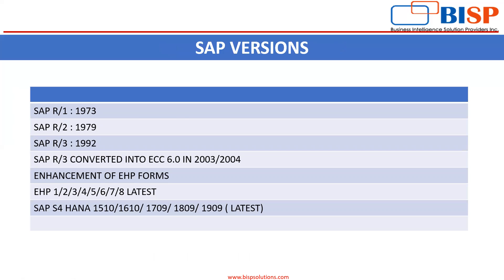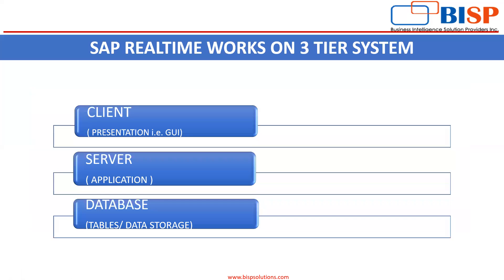SAP was established in 1972 — it is a German company. The first version was launched in 1973, followed by various versions. Focusing on the latest version, that is SAP S4 HANA, it was launched in 2015, and the latest version we operate in was launched in 2019, so SAP S4 HANA 1909 is the latest version. There are many ERP software vendors available in the market — for example, Oracle, Microsoft, Infor, Oracle NetSuite — but SAP is currently leading them all.